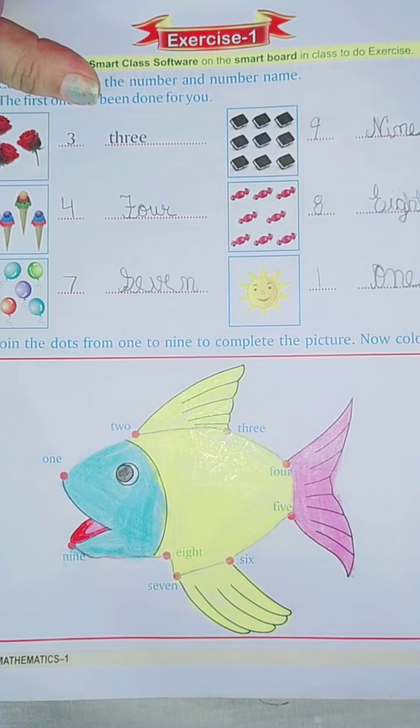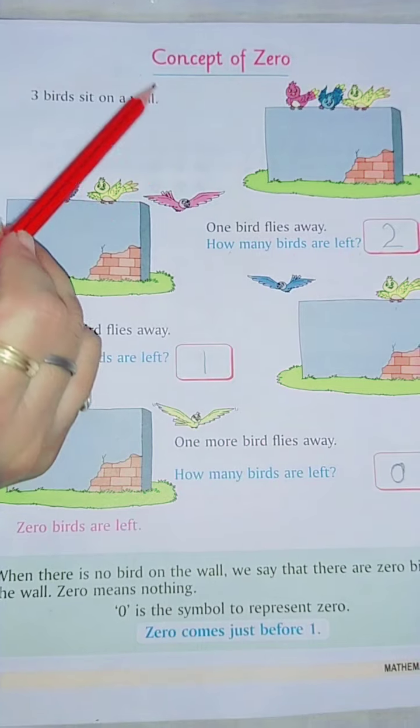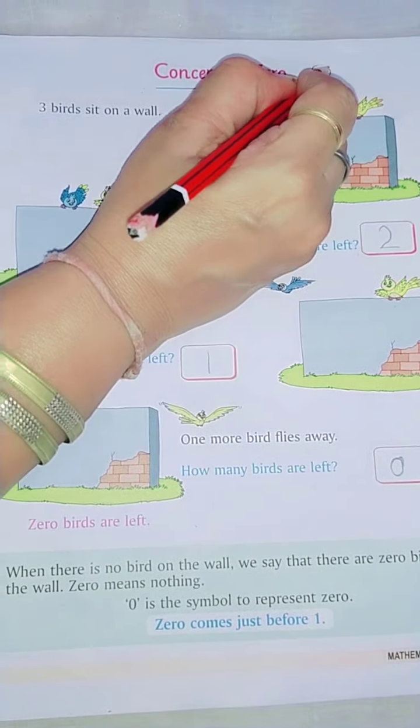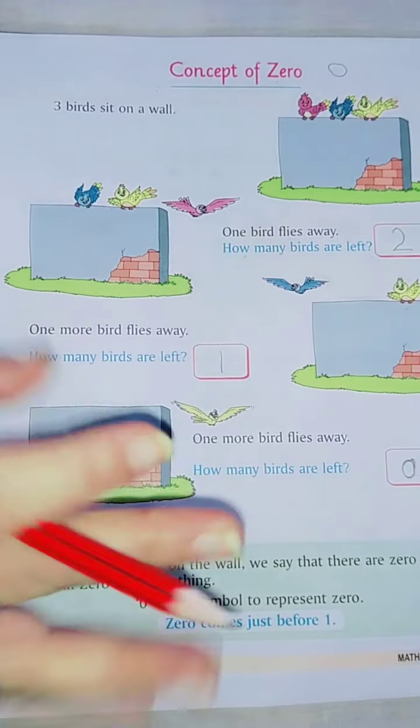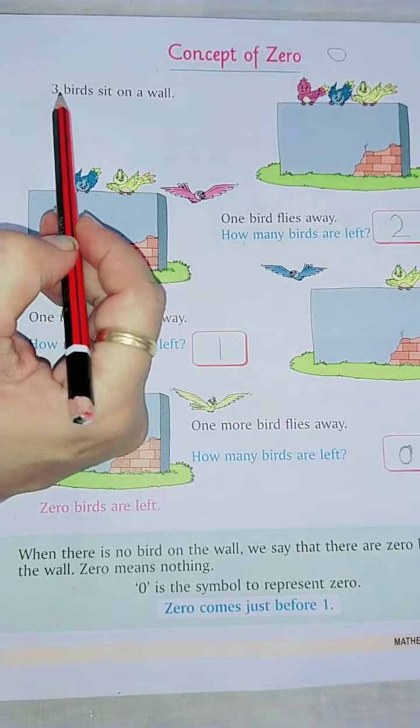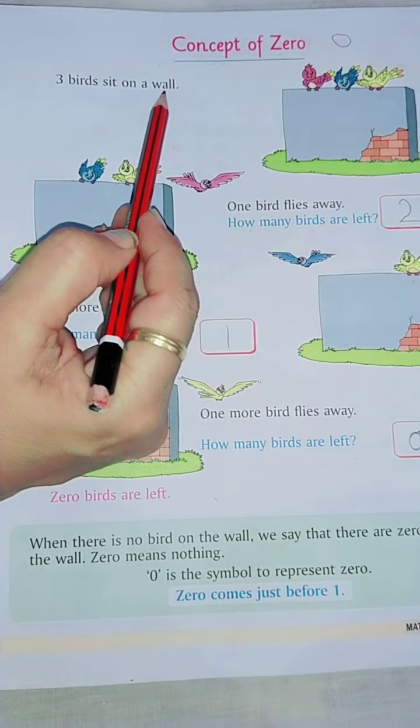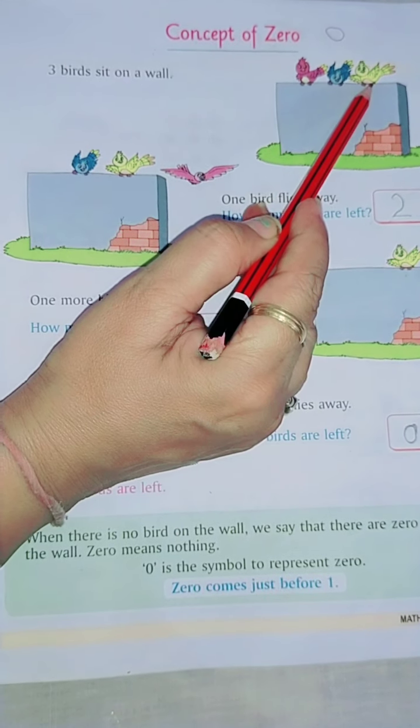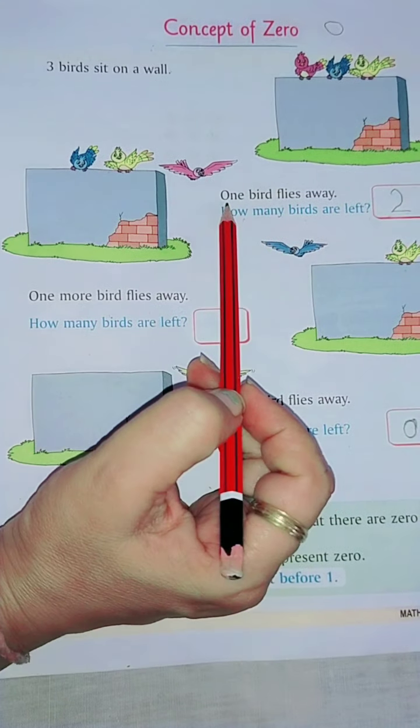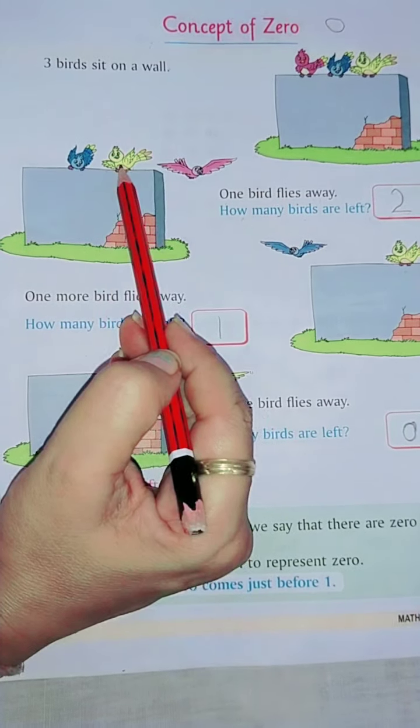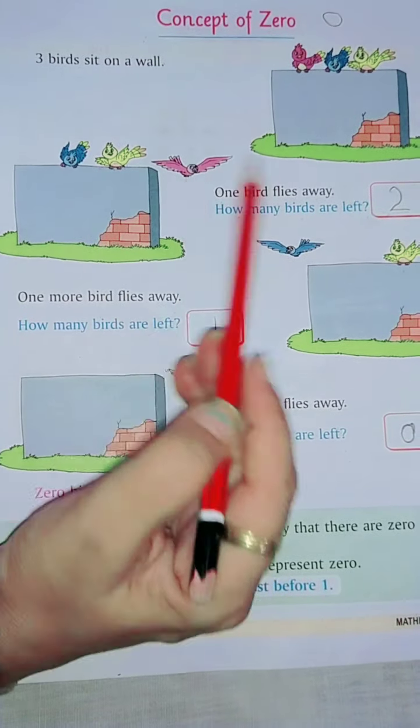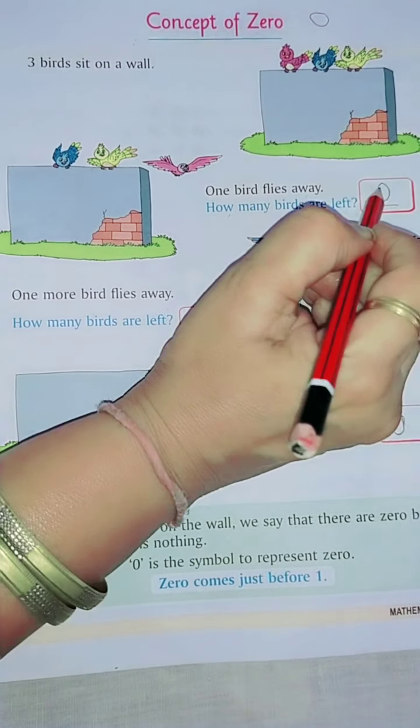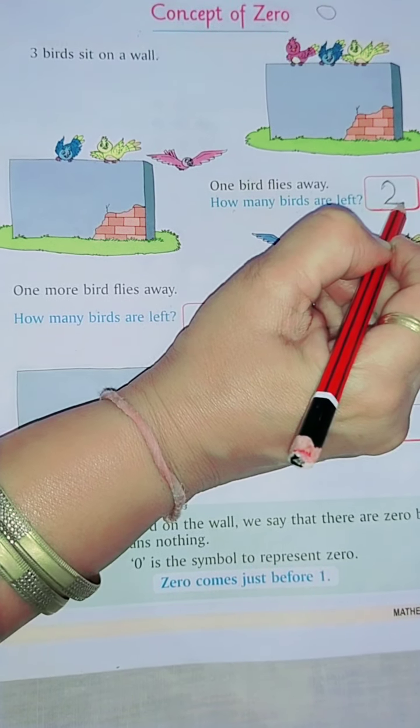Now page number 19. It is another topic, concept of zero. You know what is zero? Zero matlab kuch bhi nahi, nothing. See 3 birds sit on a wall. How many birds are sitting? Diwar pe 3 birds, 1, 2, and 3. Now in the next picture 1 bird flies away. Out of 3 birds, 1 flies away. Now how many birds are left? 1, 2. So you will write here 2.